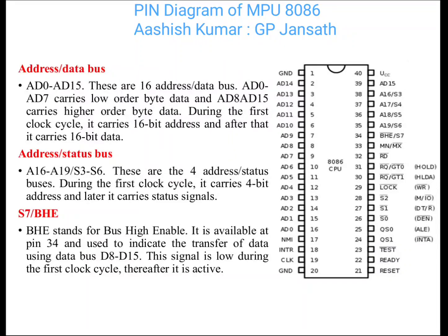Address and status bus: A16 to A19 and S3 to S6 form the high order address and status bus. During the first half of the clock cycle, it carries a 4-bit address, and later it carries status signals after the start of the memory operation.